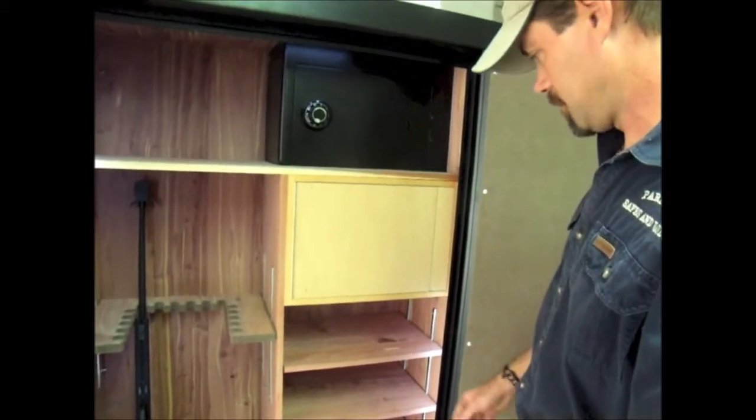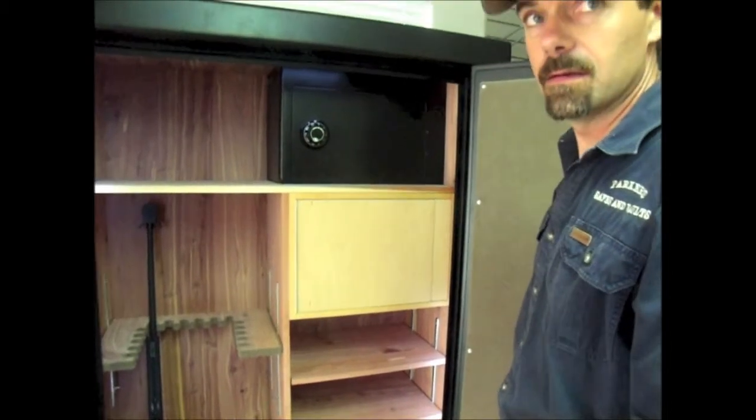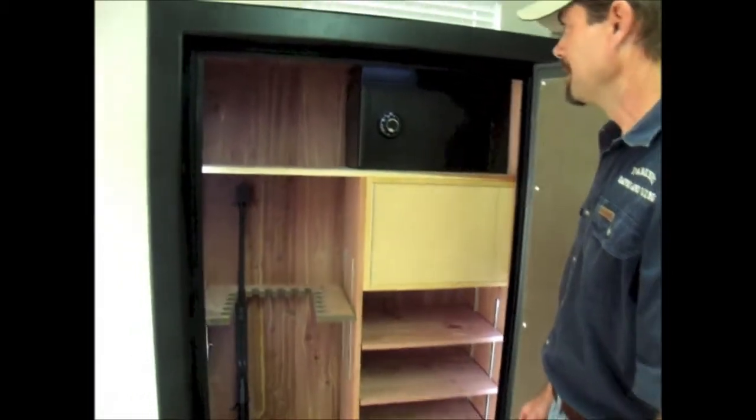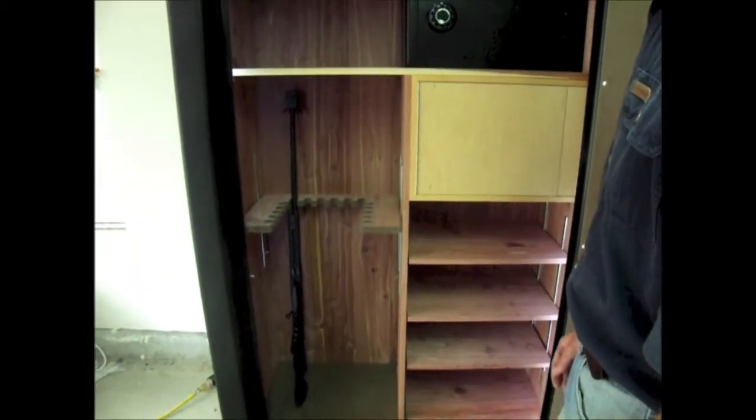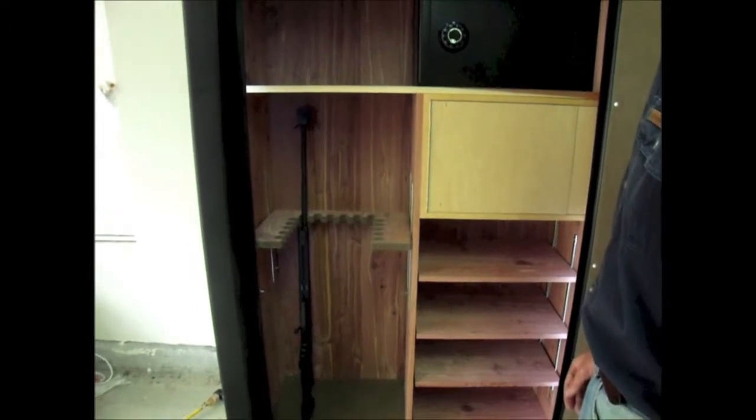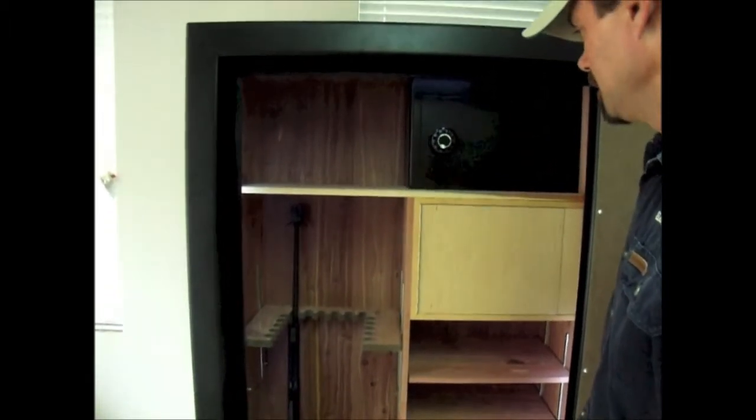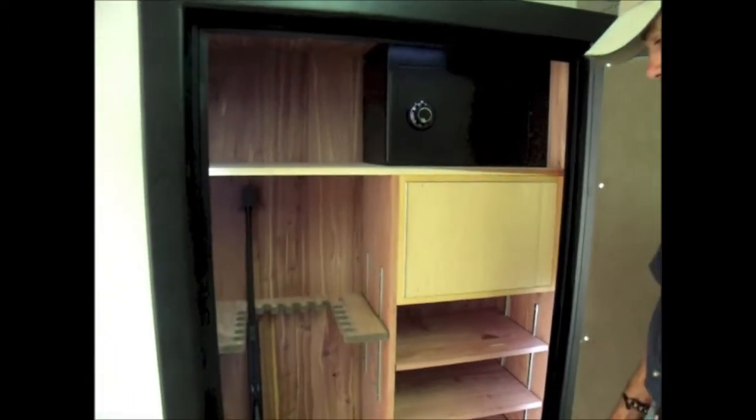So you use the maple for the wine cabinet itself. Yep, so it protects and keeps it from being tarnished by the cedar. And then of course the cedar for the outside safe, it's nice aroma and it stays really dry. Yeah, helps dehumidify.